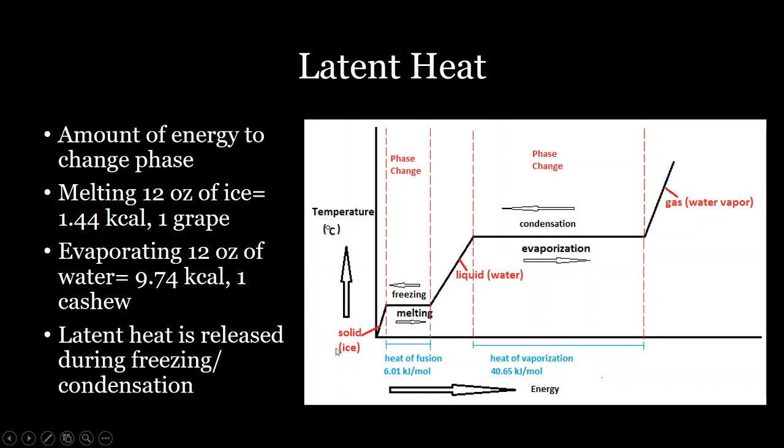For example, if you wanted to turn ice into liquid, you need about six kilojoules per mole. Mole is just an amount of that substance, which is to put it into a different perspective, to melt 12 ounces of ice or a can of ice, you would need about the same amount of calories in one grape to melt that ice. And that energy is called the heat of fusion.